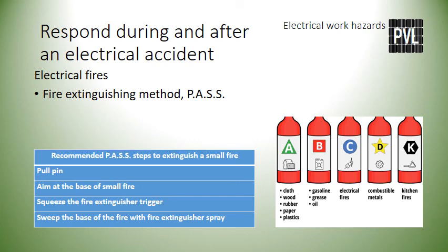At the site of a starting fire, get the fire extinguisher and pull its pin. Aim at the base of the fire and squeeze the trigger and hold it. Then spray the base of the fire with a sweeping motion. Shown on the screen are the steps recommended for using the PASS method to extinguish a small fire.